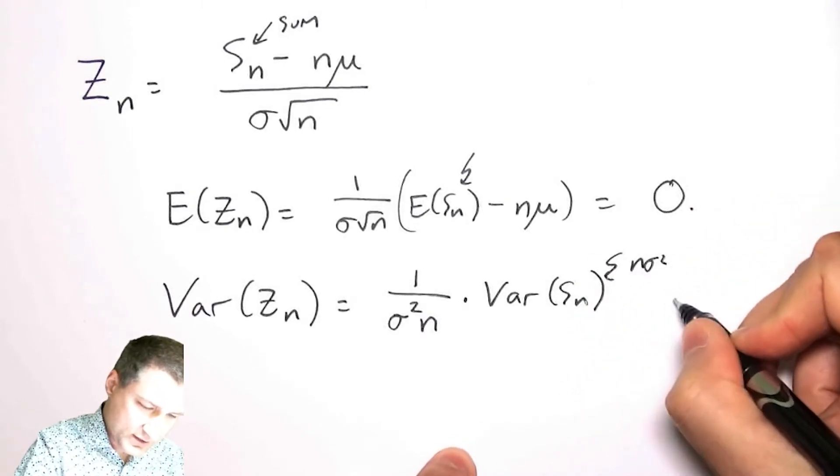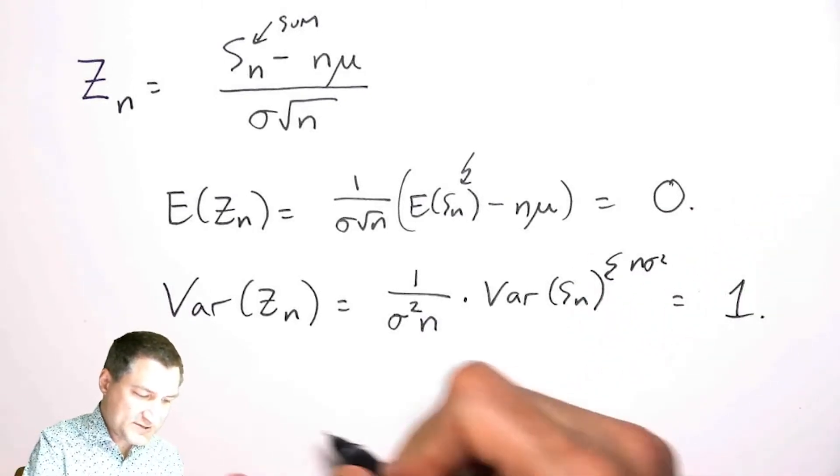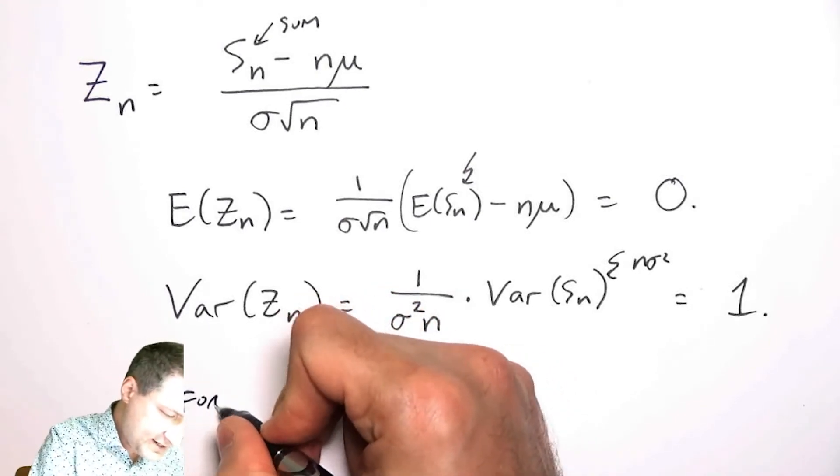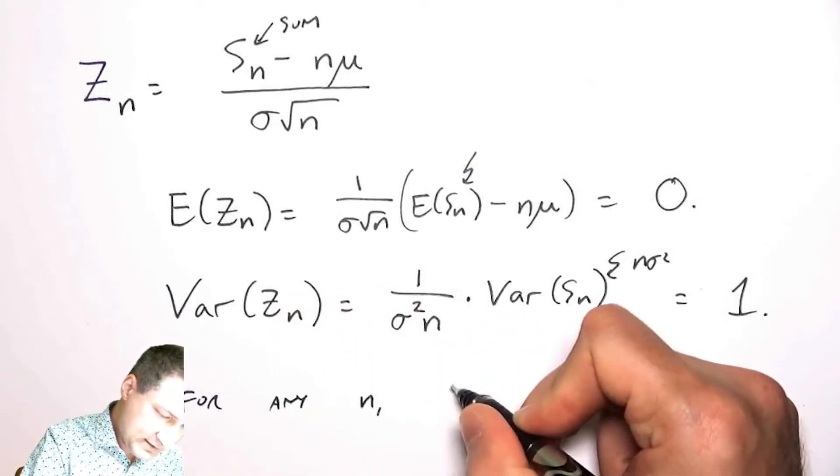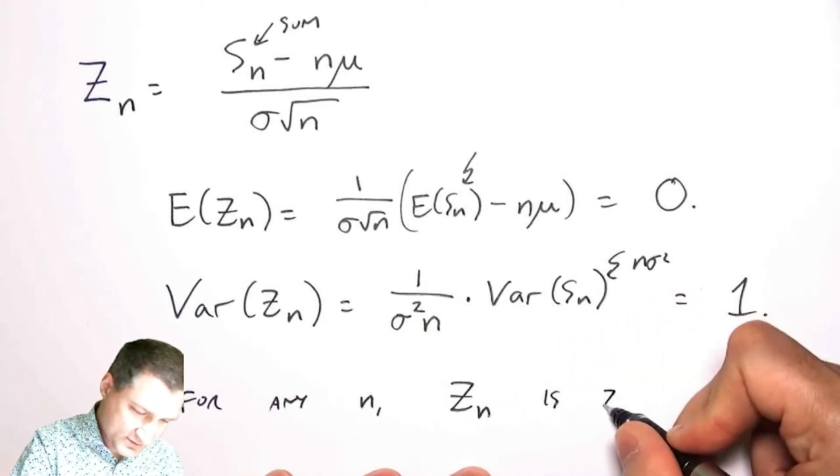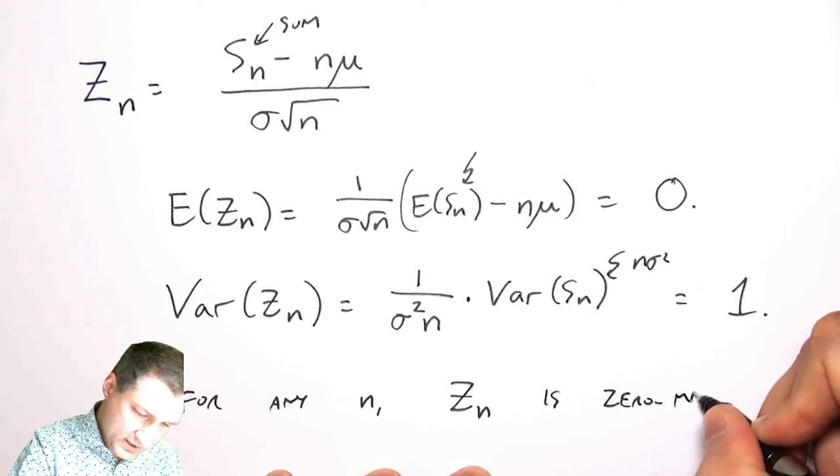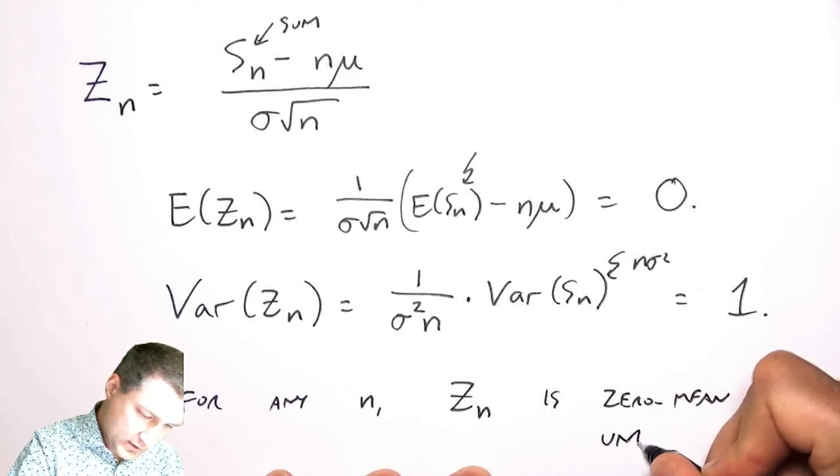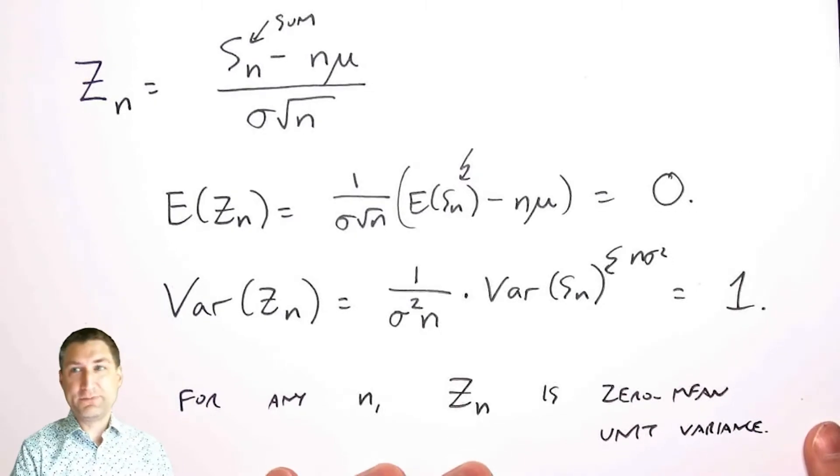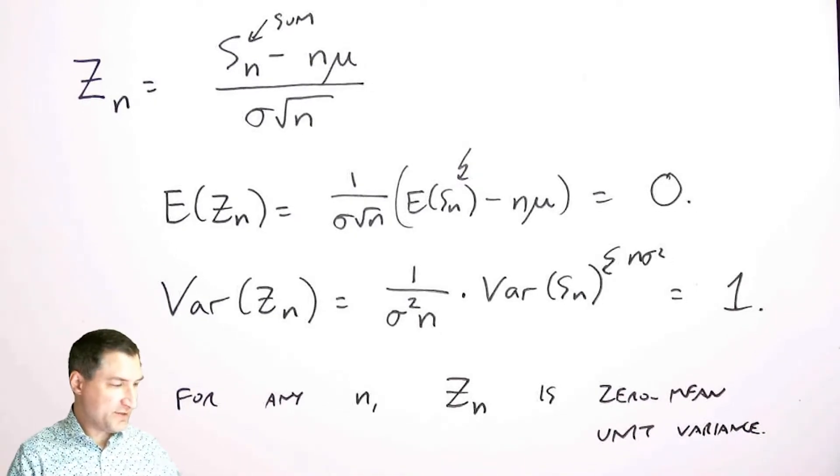The variance of this z is going to be one over this thing squared times the variance of the sum, which again this thing is n sigma squared, so this is equal to one. Basically, what I found out was that for any n, this special normalization is zero mean unit variance.